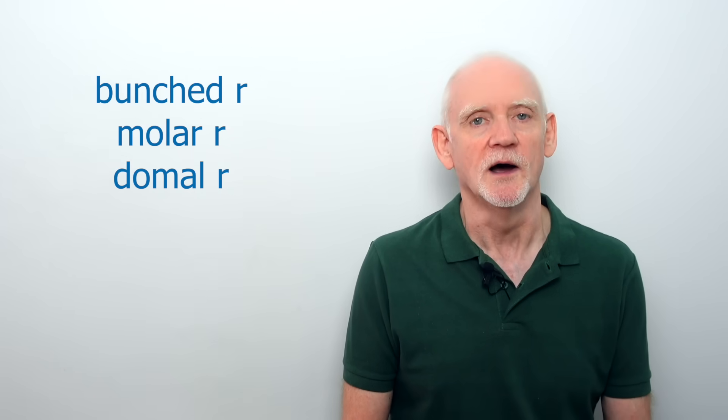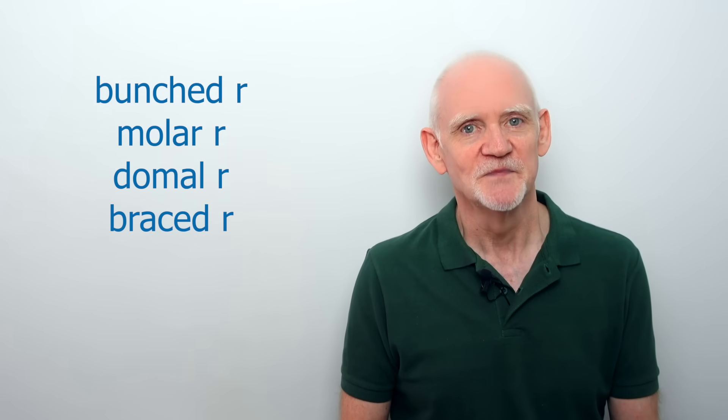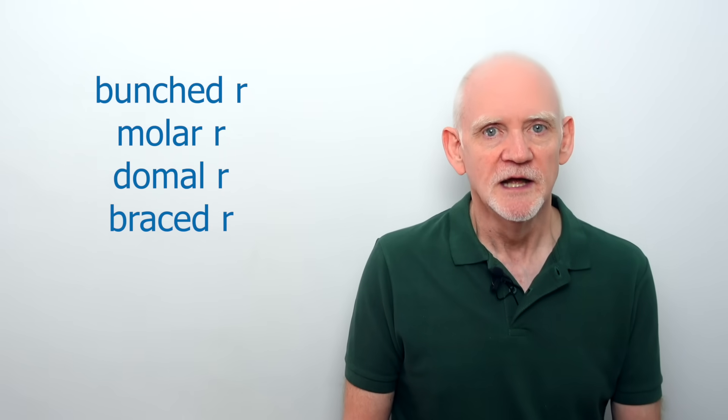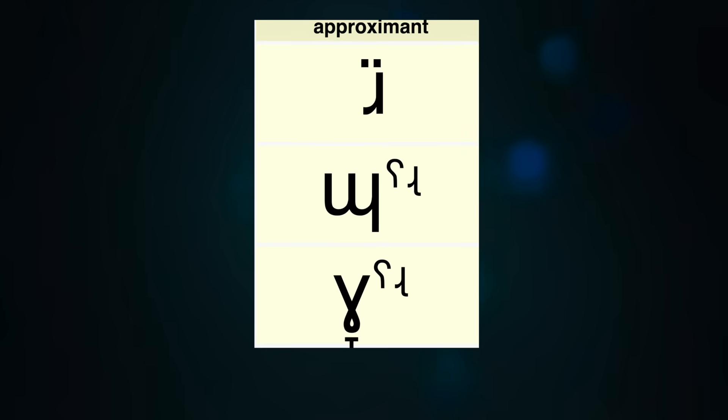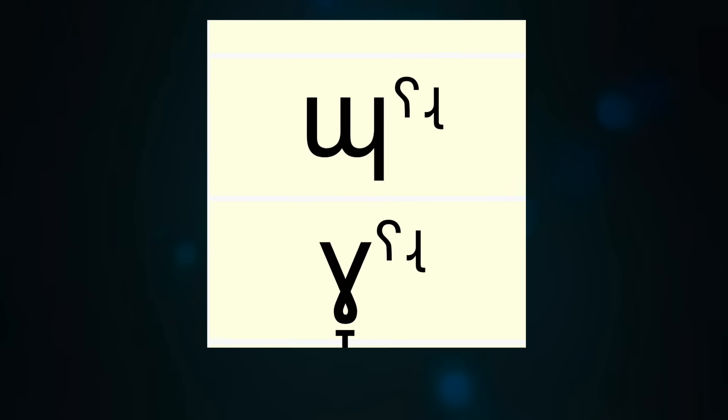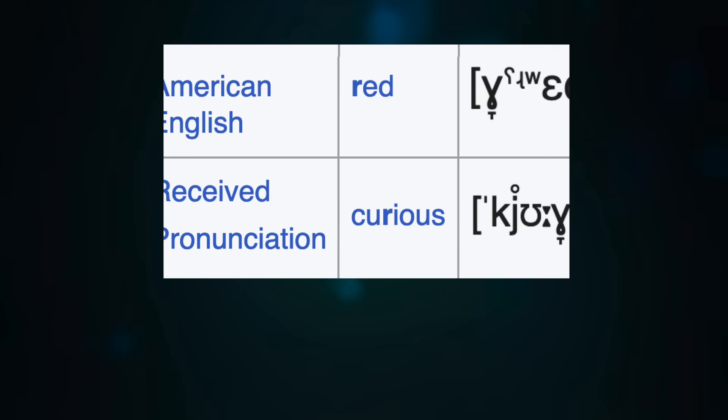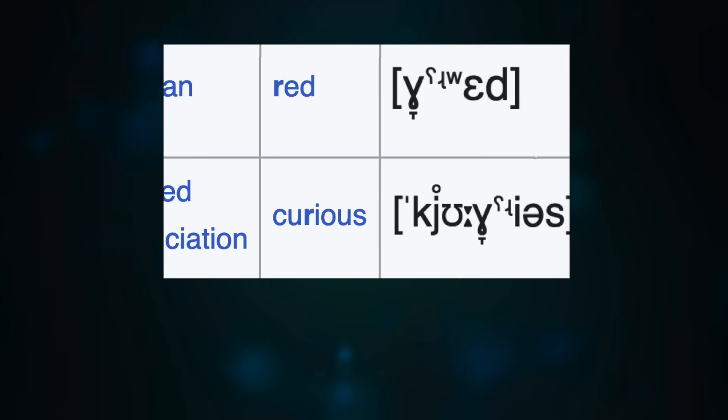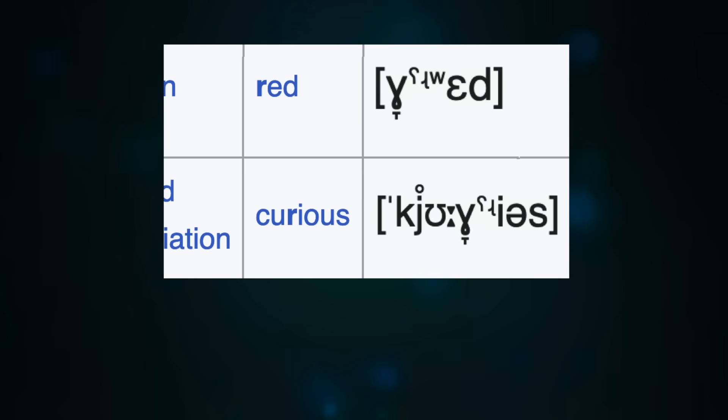This bunched R goes under various names. Bunched R, molar R, domal R, braced R. If you go looking on Wikipedia, you'll find phonetic alphabet soup, with the bunched R described as a voiced, labialised, pharyngealised, retroflexified velar approximant. Anyway, the bunched R is not necessarily velar, it's often more palatal.